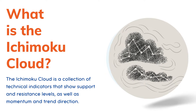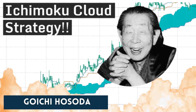The Ichimoku Cloud is a collection of technical indicators that shows support and resistance levels as well as momentum and trend direction. It does this by taking multiple averages and plotting them on a chart. It also uses these figures to compute a cloud that attempts to forecast where the price may find support or resistance in the future. The Ichimoku Cloud was developed by Goichi Hosada, a Japanese journalist, and published in the late 1960s.